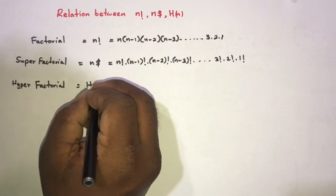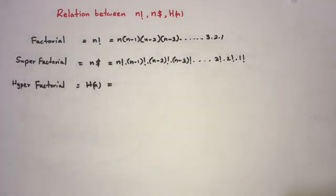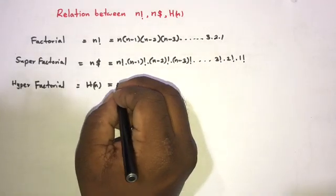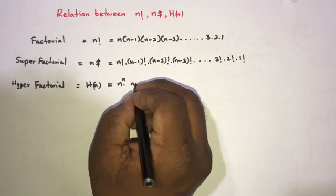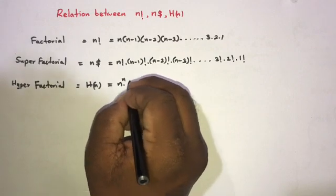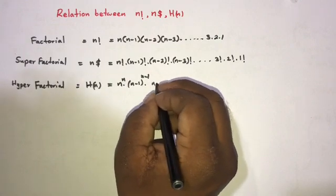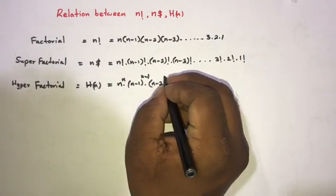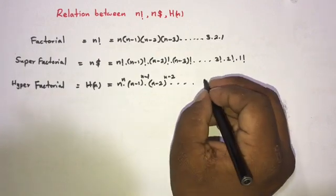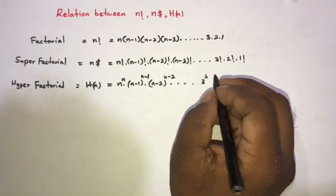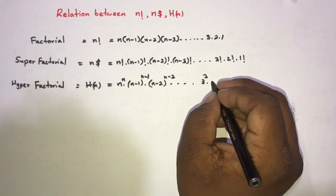Now we are going to talk about hyper factorial. We represent the hyper factorial generally as H(n). This is equal to n raised to the n power, times (n minus 1) raised to the (n minus 1) power, times (n minus 2) raised to the (n minus 2) power, and so on to 3 to the 3 power.